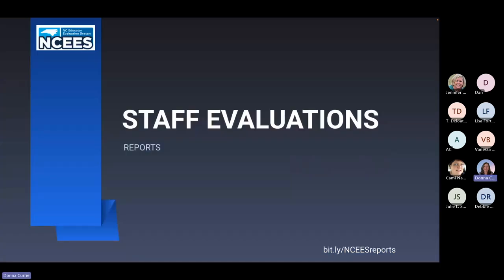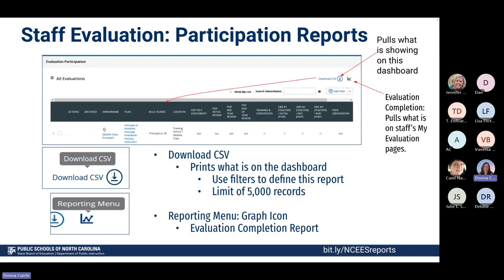Now let's talk about the reports you can run. First is the staff evaluation report. When you are on the staff evaluation screen in NESES, you'll find two options: download CSV and a reporting icon. Download CSV pulls what is currently on the dashboard, so your filters are very helpful here. The evaluation completion report pulls all information from the staff evaluation page. For larger districts, download CSV only pulls 500 records at a time, so use filters to pull one plan at a time.